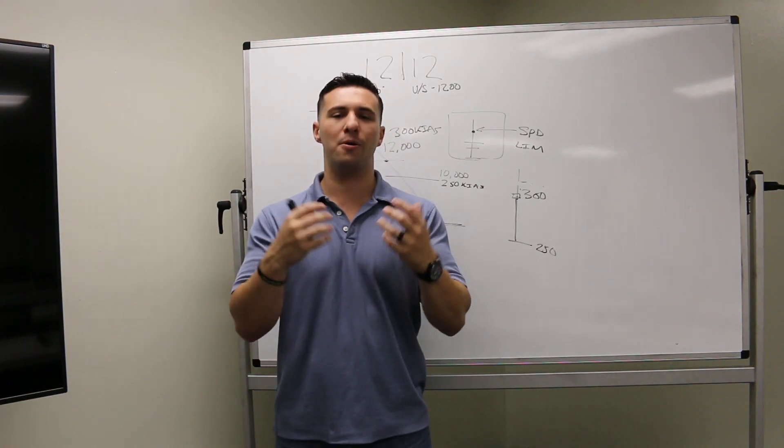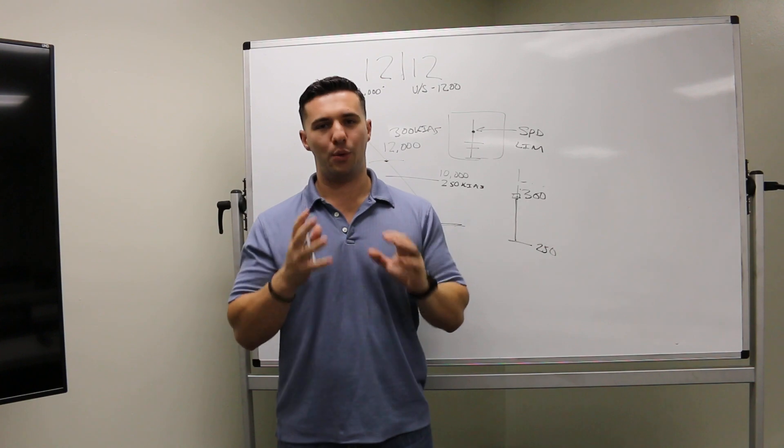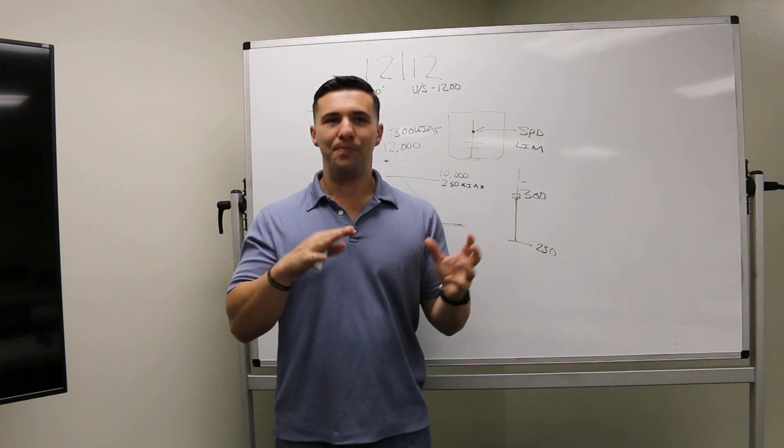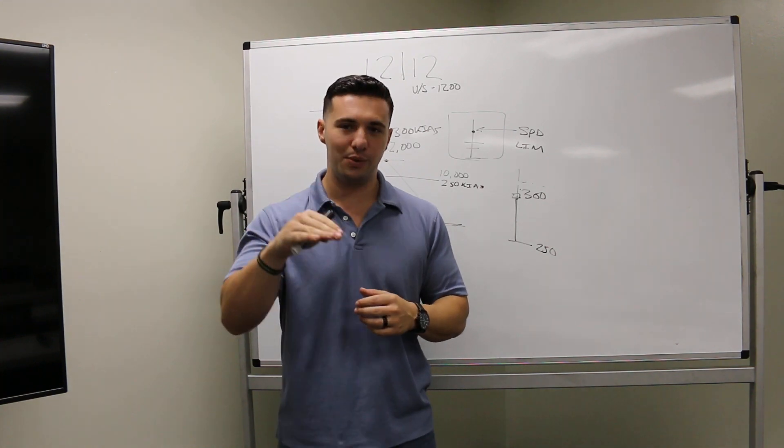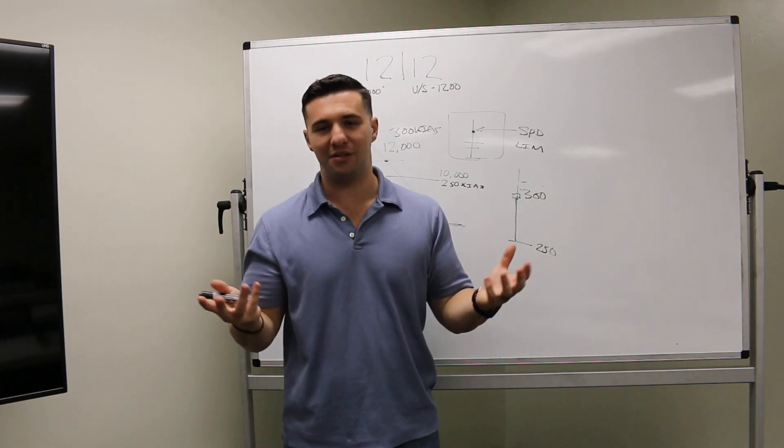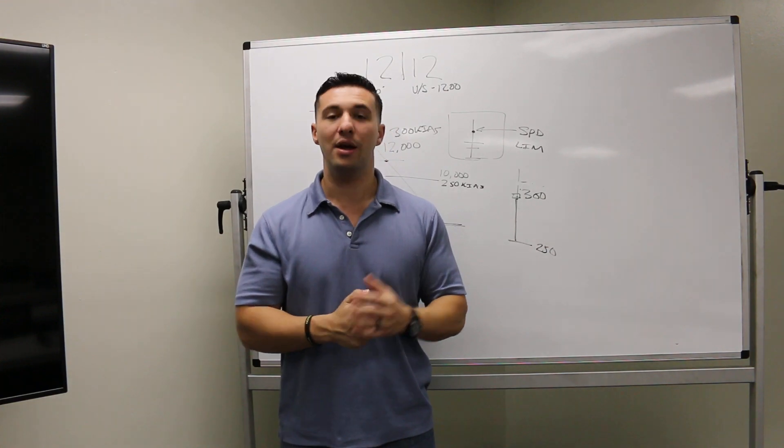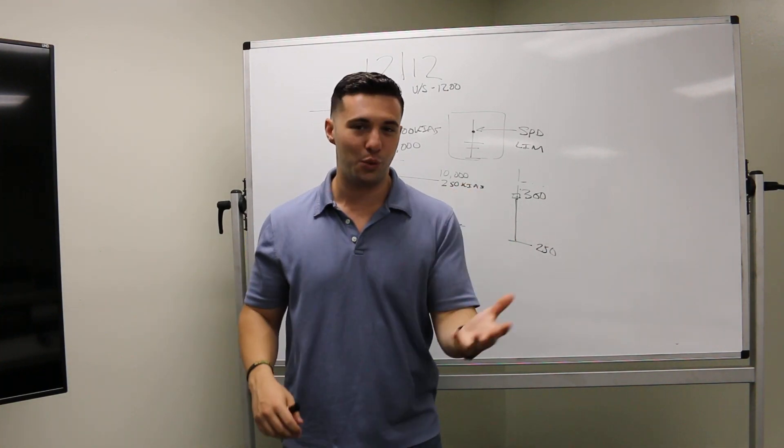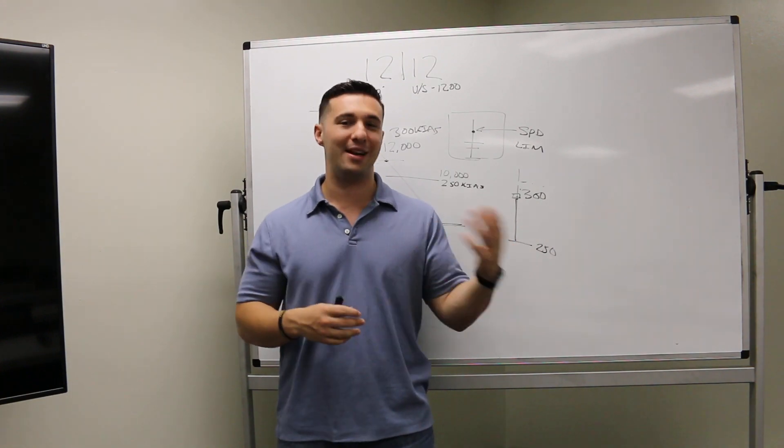But this is general ballpark figures that will help you to try to plan your descent and have somewhat of a compromise between continuing to descend at a fairly decent rate while still being able to slow down. Now if you're flying a 737-800 with winglets or you're flying a heavy 321 with winglets loaded up, maybe you got a tailwind...